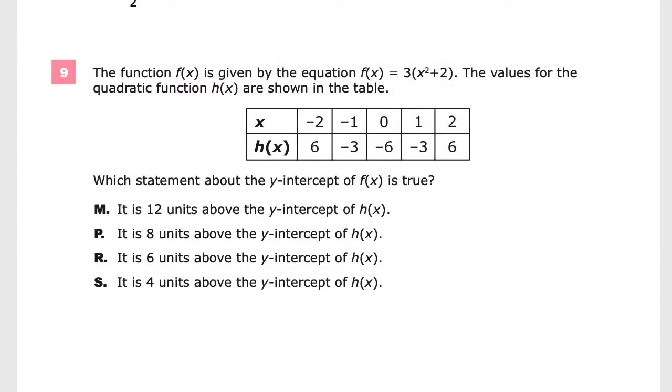The function f(x) is given by the equation f(x) equals 3 times the quantity x squared plus 2. The values for the quadratic function h(x) are shown in the table. One thing to think about here is we have two different ideas going on. This is f(x) and h(x) has their values here.